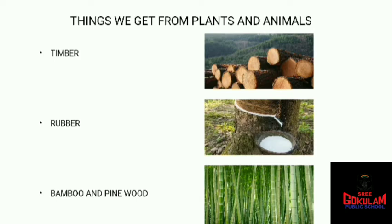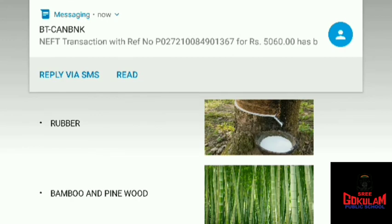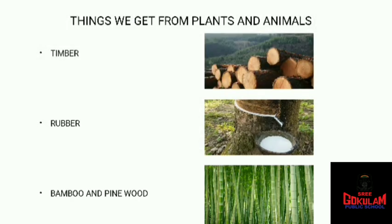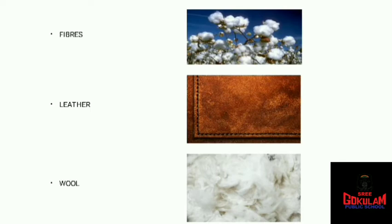Next is bamboo and pine wood. Bamboo is really soft, and pine wood is also soft — not like other trees. Bamboo and pine wood can be made into a watery, pulp-like substance, and this is used to make paper — the paper in our notebooks and textbooks.